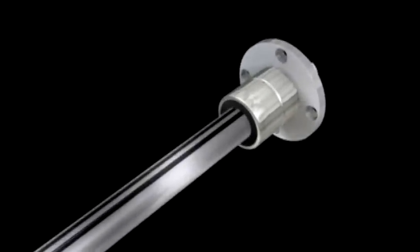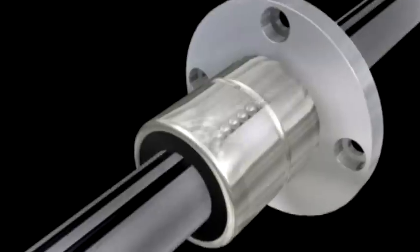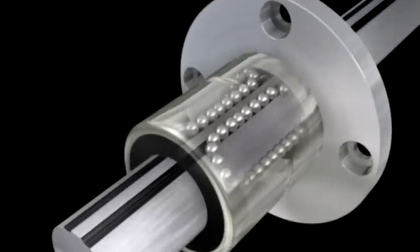NB's ball spline utilizes ball bearings as its rolling elements and consists of a nut and a spline shaft. Its movement is similar in principle to that of ball bush.